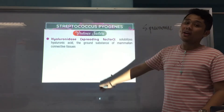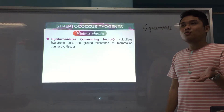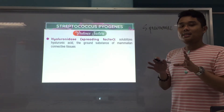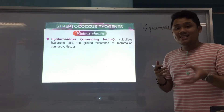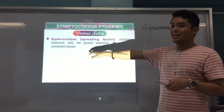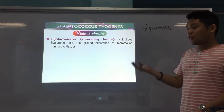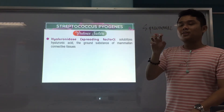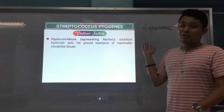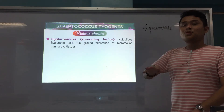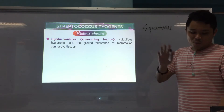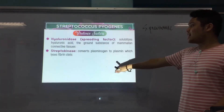Hyaluronidase — the spreading factor — is an enzyme that destroys or solubilizes hyaluronic acid, which is the ground substance of our connective tissues. By solubilizing hyaluronic acid, the ground substance of connective tissue is weakened, which allows the bacteria to spread more rapidly from one place to another.